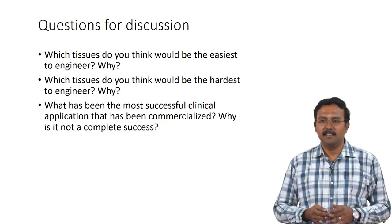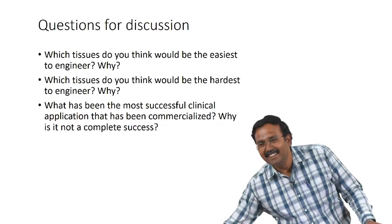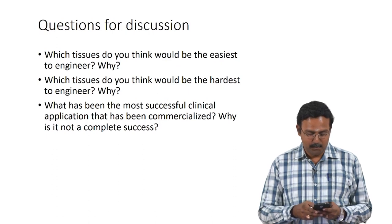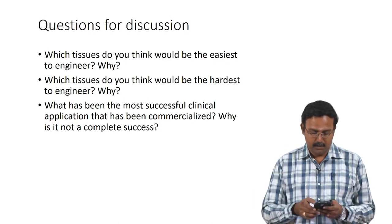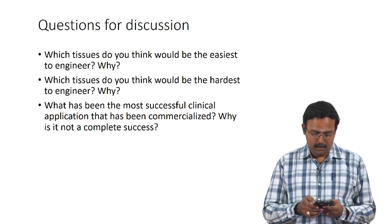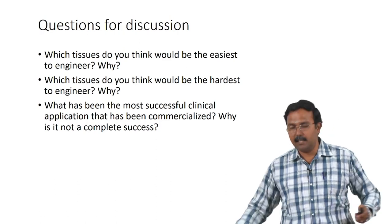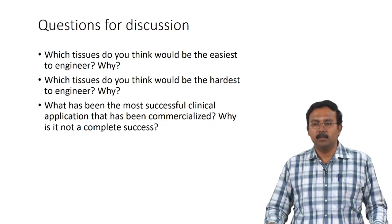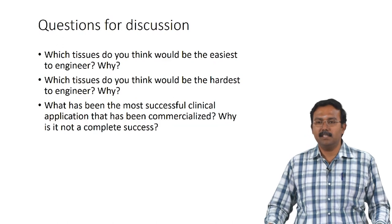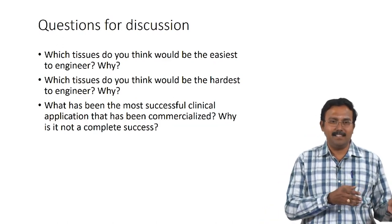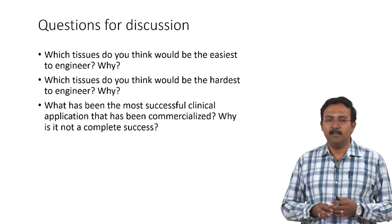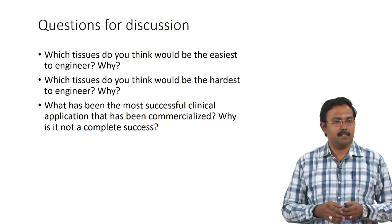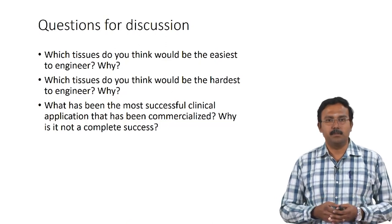OP-1 Putty is a spinal fusion product from Stryker — it basically contains recombinant human bone morphogenetic proteins. The commercial ones kind of align with what you thought would be the easiest tissues to engineer. Another major reason cartilage is actually easier to engineer is that it is an avascular tissue — you do not need to worry about vasculature. Creating vasculature is one of the major limitations in tissue engineering, and that can actually be overcome when you are working on avascular tissues.